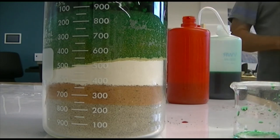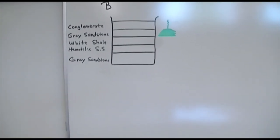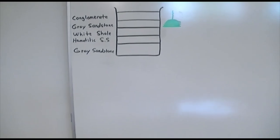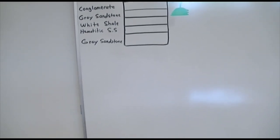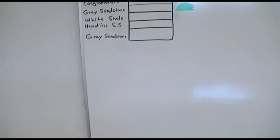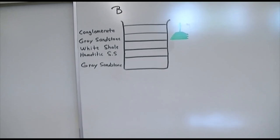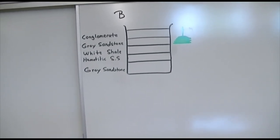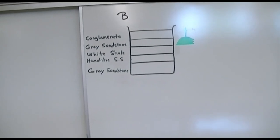Does the water penetrate all layers in beaker B? No — it will not penetrate the white shale. The white shale has no permeability and no porosity. Drawing the diagram: the conglomerate has a high rate of permeability, the gray sandstone had a bit higher porosity and slower permeability, and then we get to the white shale and nothing happens. Water does not penetrate all layers in beaker B.